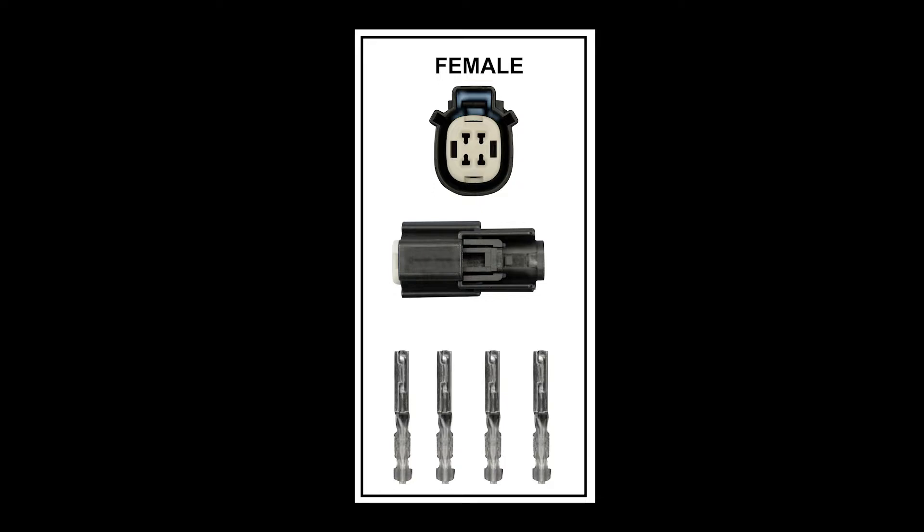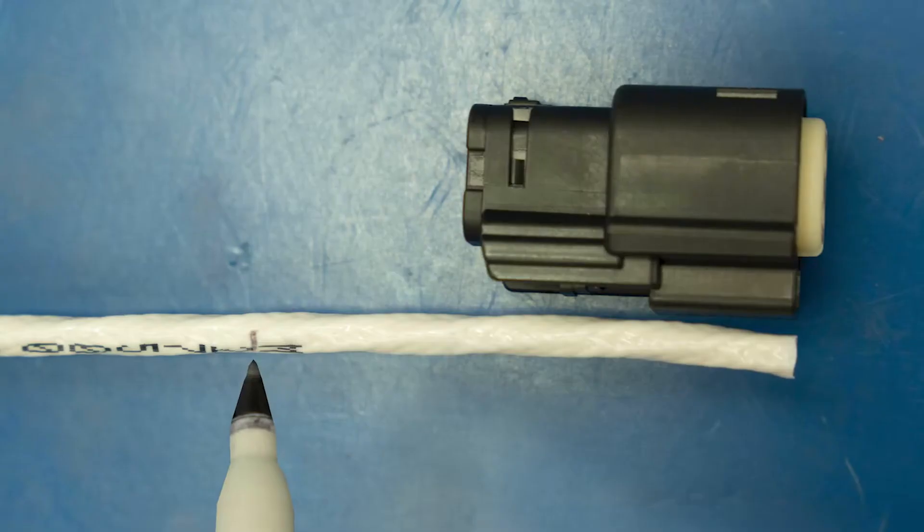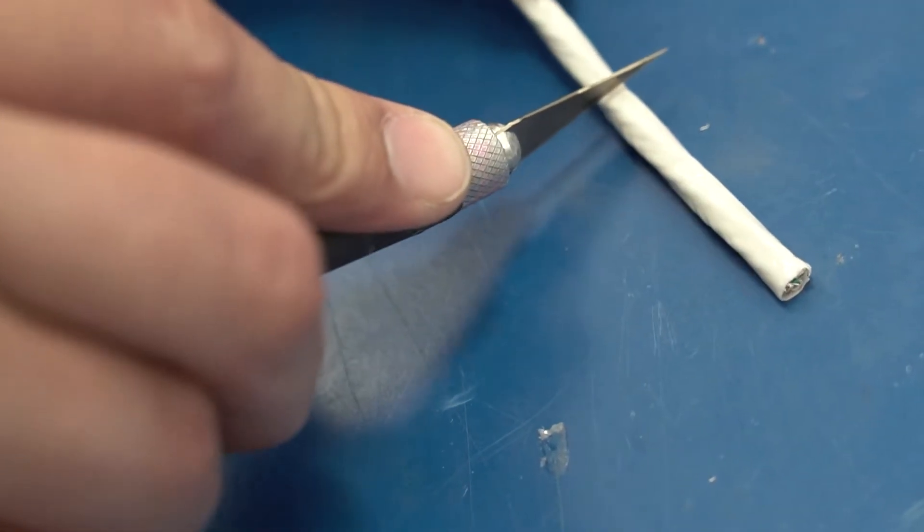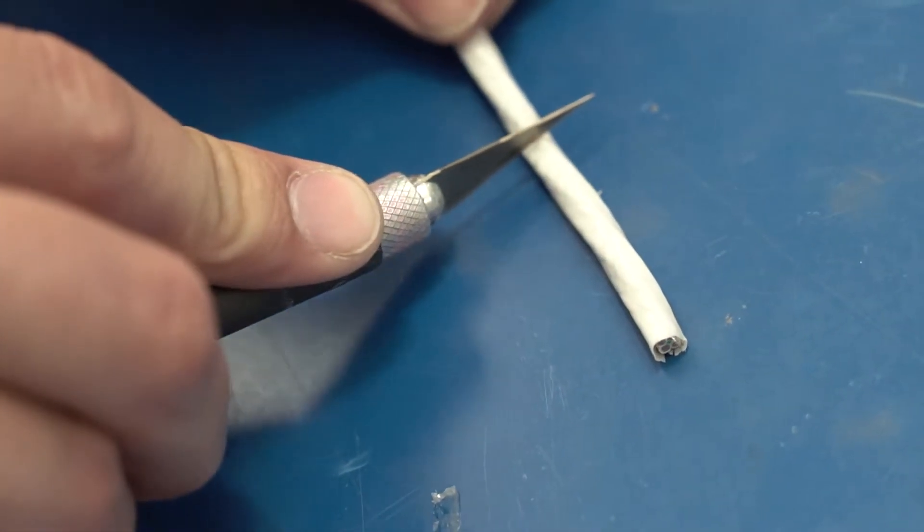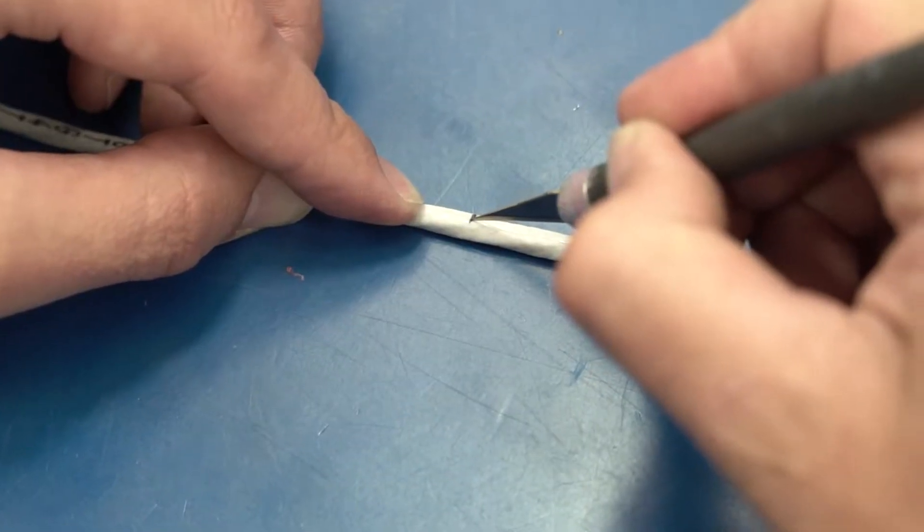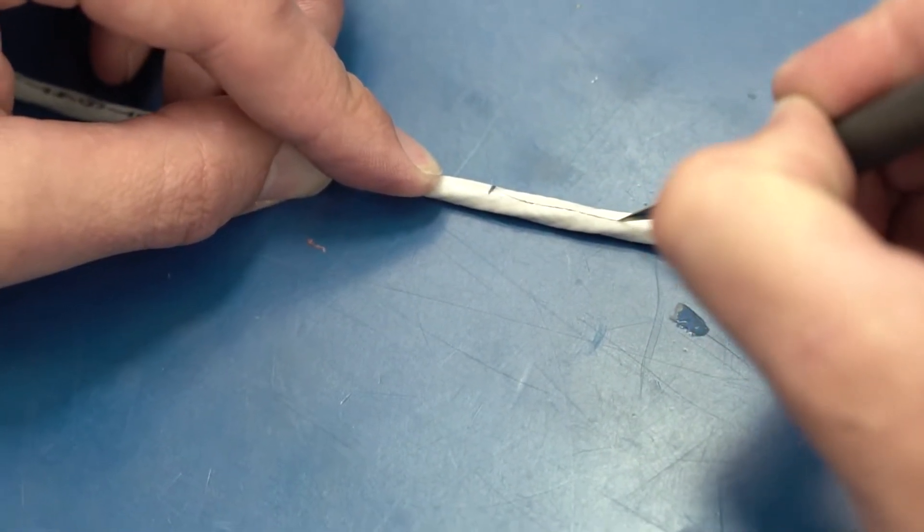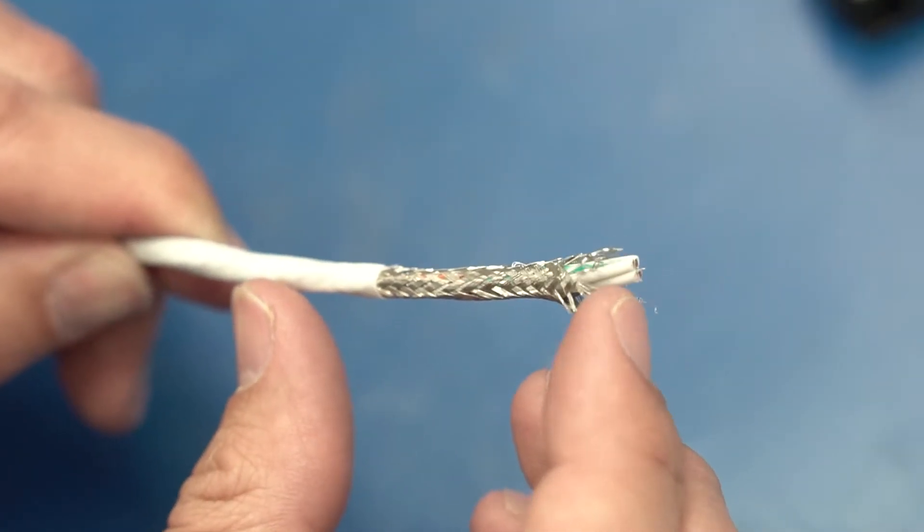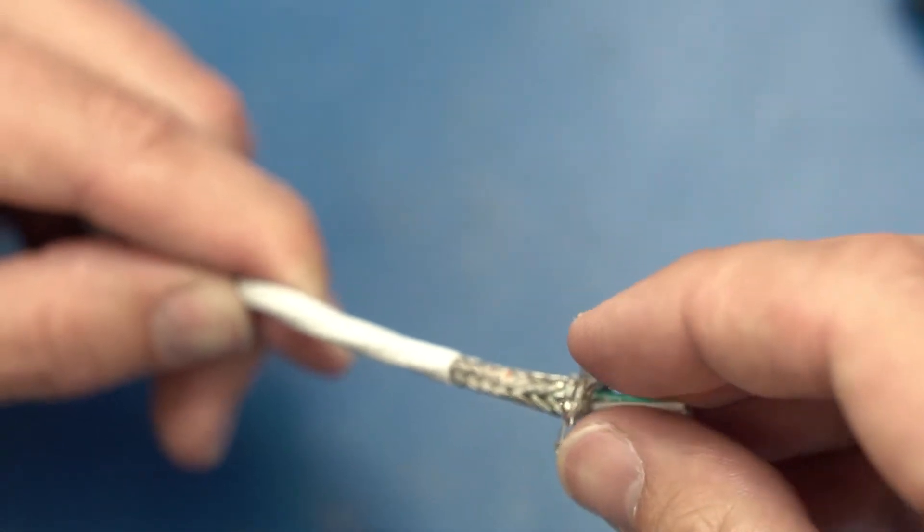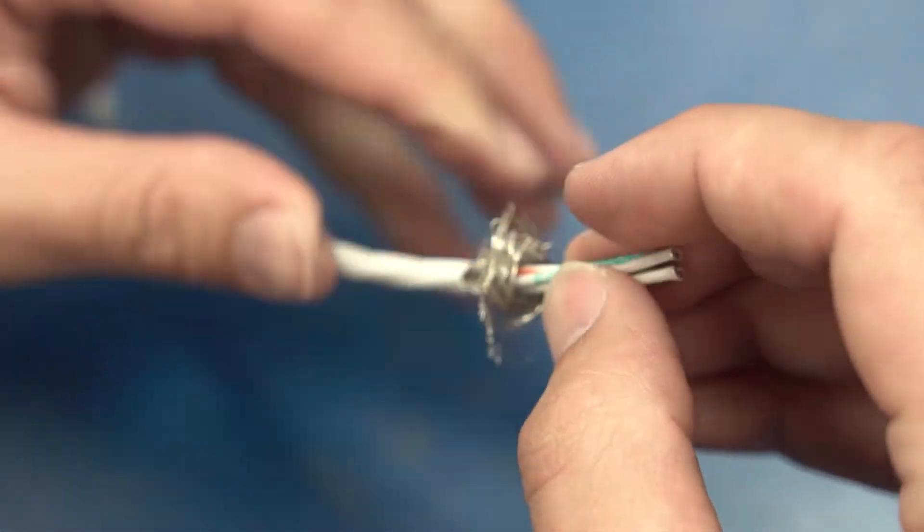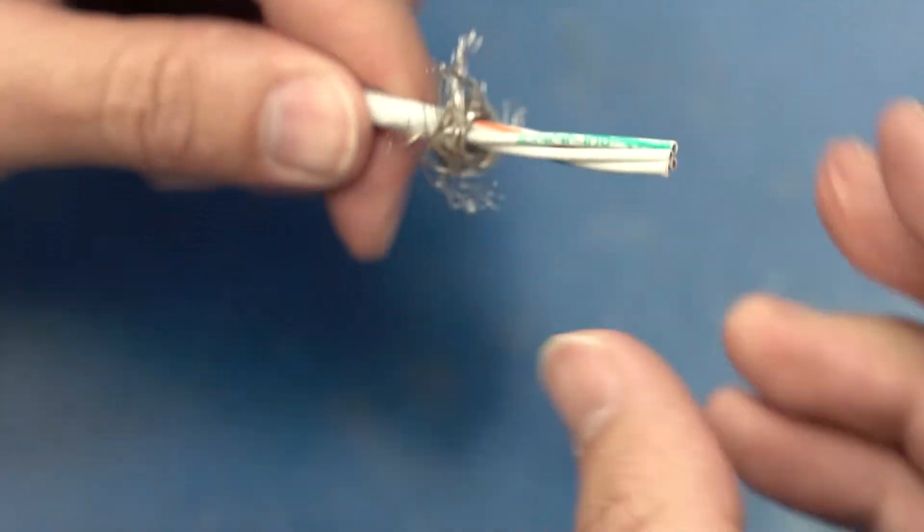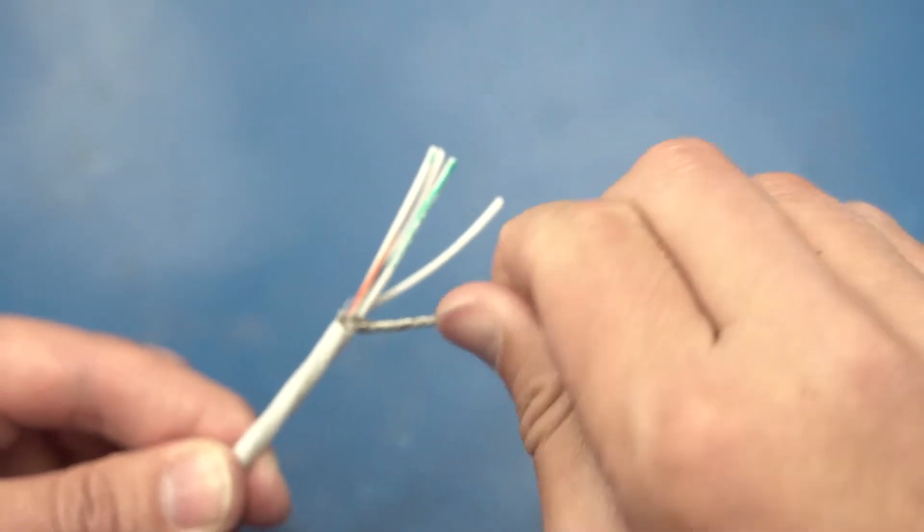Now grab the female four position connector and the 18 gauge four conductor wire and mark as shown. Using an exacto knife lightly score the perimeter of the insulation and then slit down the center. Now you can remove the sleeving. Move the shielding away so you have better access to the four wires.